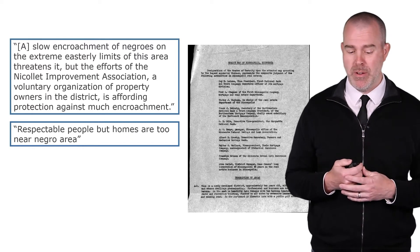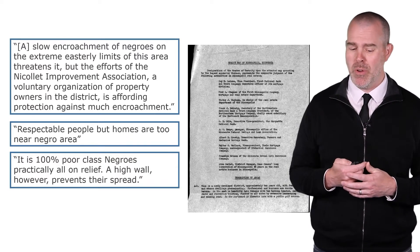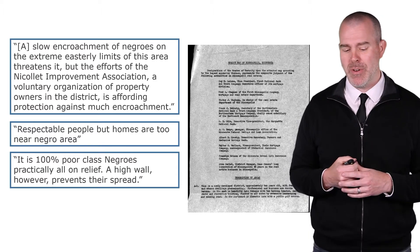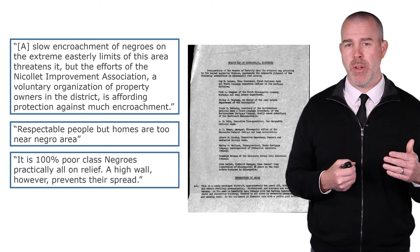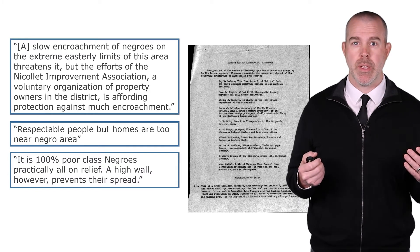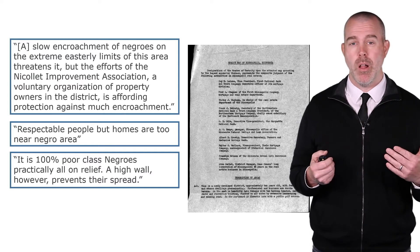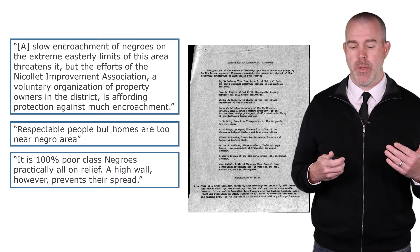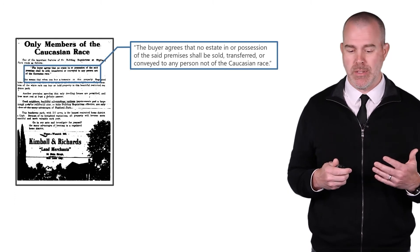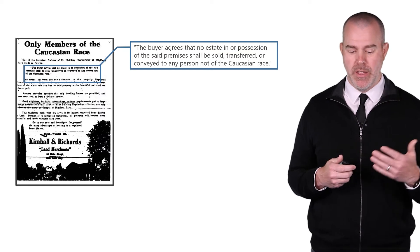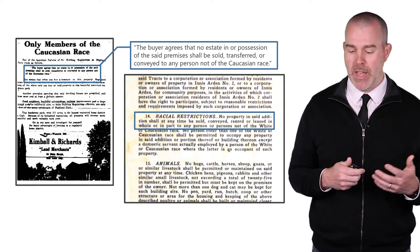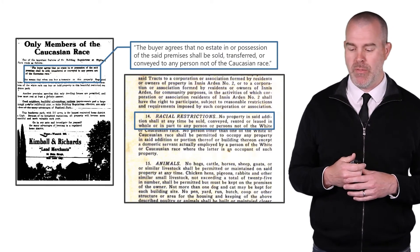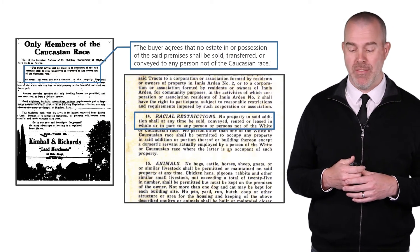Here's another neighborhood — probably not an A neighborhood: 'Respectable people, but homes are too near a Negro area.' This one gets me every time: 'A hundred percent poor class Negroes, practically all on relief, but a high wall prevents their spread' — so another neighborhood of presumably white Americans was so concerned about property values that they built a wall. It was actually legal at this point to refuse to sell your home to someone based on their race. Here's a bill of sale stating you can't sell to anyone other than someone of the Caucasian race, and a covenant stating: 'No property shall at any time be sold, conveyed, rented, or leased to any person not of the white or Caucasian race.'